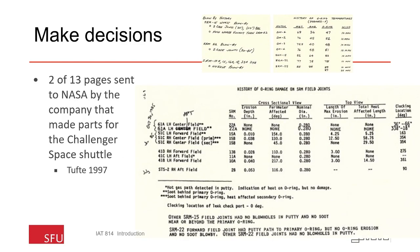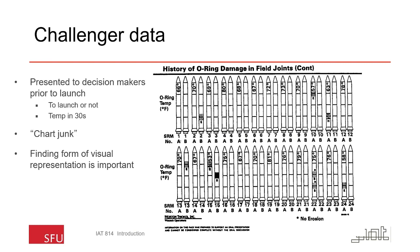Speaking of explaining, I'll briefly take you through a case study of the Challenger disaster. In 1986, the Space Shuttle Challenger lifted off in January and exploded about a minute and a half into the launch. A presidential commission was put together to determine why this happened. Here are two of the thirteen pages sent to NASA by the company that made parts for the Challenger Space Shuttle — as you can imagine, it's a little hard to understand, with annotations and tables of numbers. What was hoped to improve things was that Morton Thiokol, who had a hand in developing the booster rockets, put together a history of O-ring damage to those booster rockets.